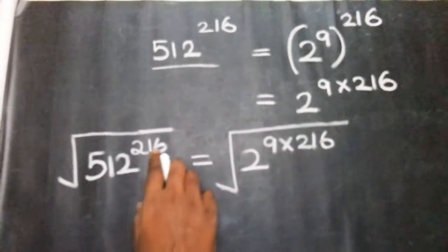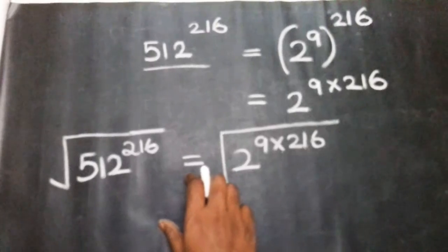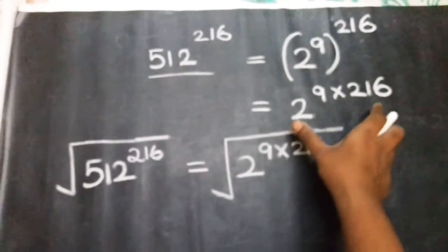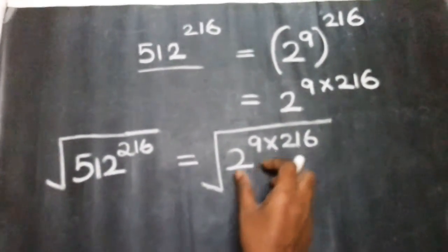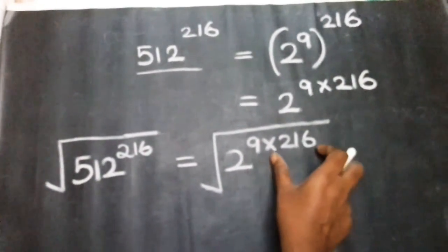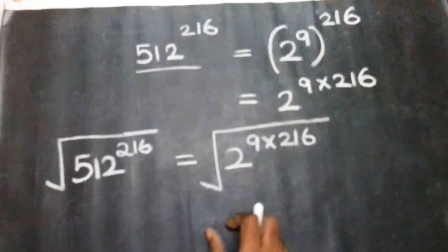512 raised to the power 216 — that is equal to: here we have to simplify. 512 is 2 raised to the power 9, so we get 2 raised to the power 9 into 216.